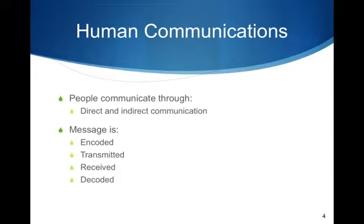Human Communications. People communicate through direct and indirect communications. Direct communications would be through speech; indirect communications would be through written words. Messages must first be encoded, transmitted by the sender, received, and decoded by the receiver. The process may experience transmitter failure, interference, and poor reception. Identifying and resolving problems before they occur improves the quality of the message.